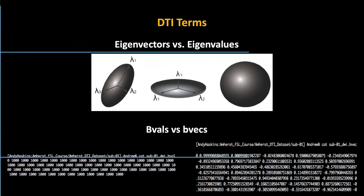The BVECs are going to be different from subject to subject — they're subject-specific and indicate the direction of the diffusion gradient. It's like a three-digit code telling exactly the direction. For that very first BVAL scan with a B0, the BVECs are going to be zero, zero, zero because there's no diffusion gradient.